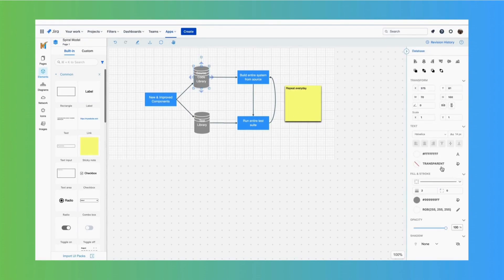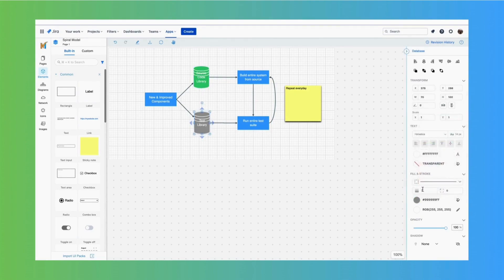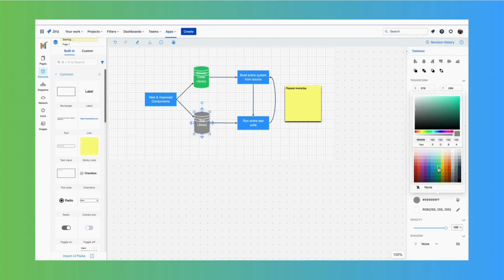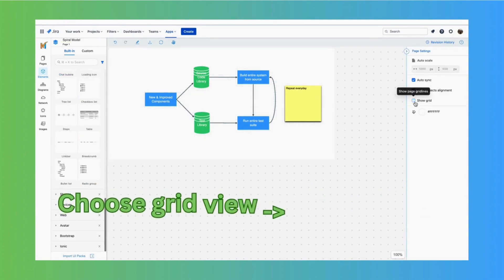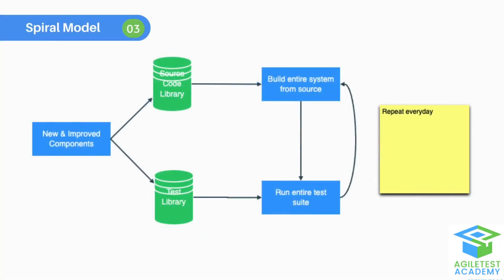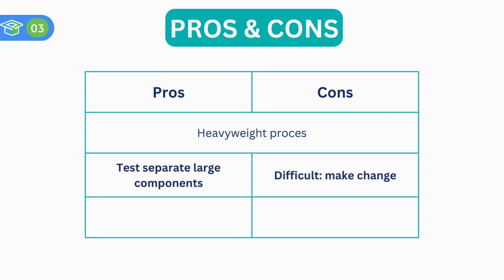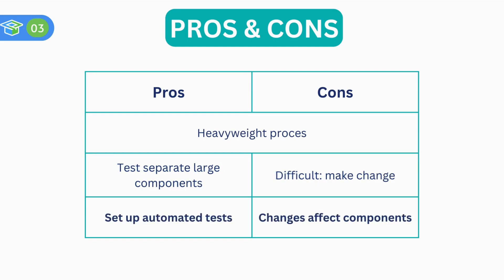Spiral development is widely used to develop new versions of large systems. Spiral model is a heavyweight process due to its characteristics. Large components can be developed and tested separately, but it is difficult to make changes to the architecture. Spiral model is good for setting up a comprehensive set of automated tests, but small changes will affect many components.